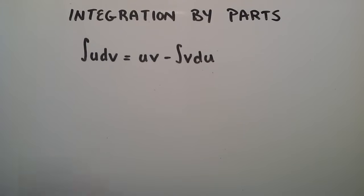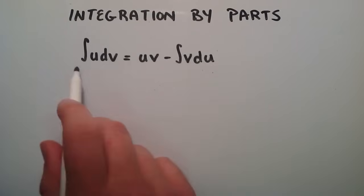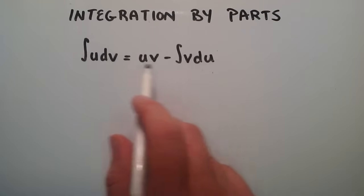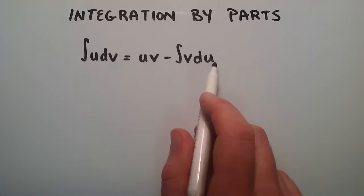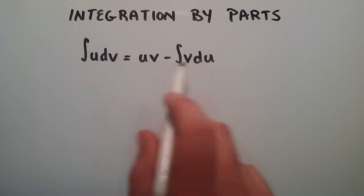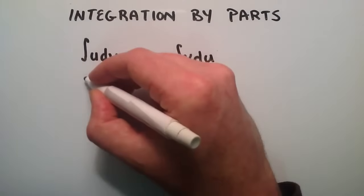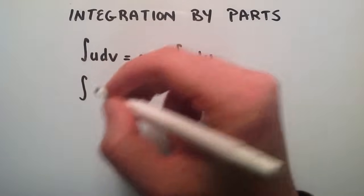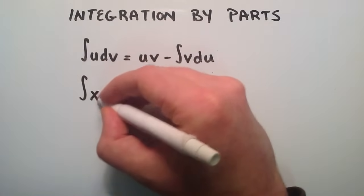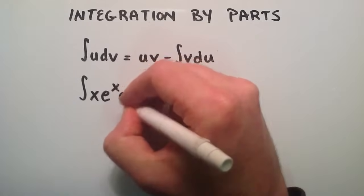So basically, this is the general form of integration by parts. If you don't know what this means, don't worry about it. I'll be translating what this means through an example here. For our example, we're going to look at the integral of x times e to the x with respect to x.